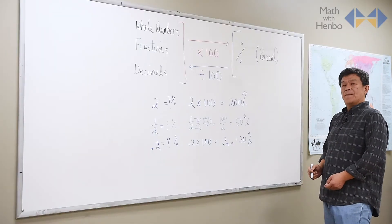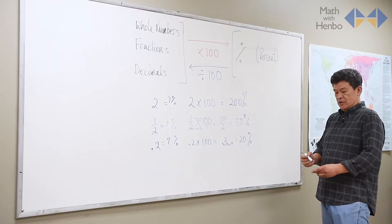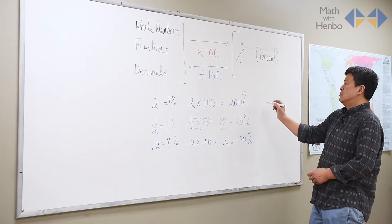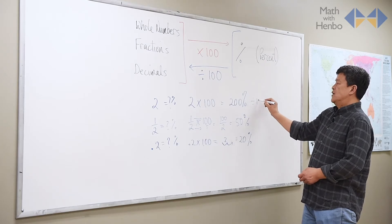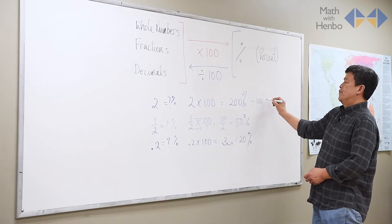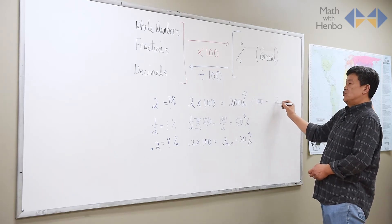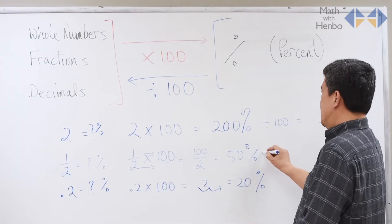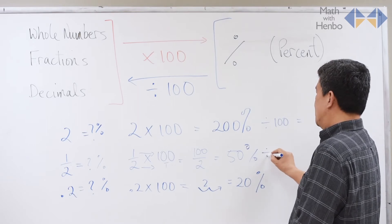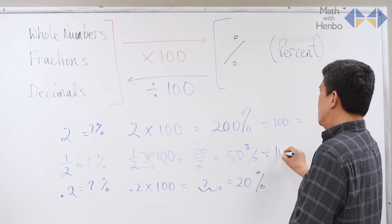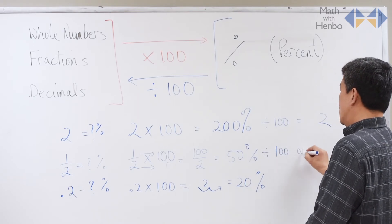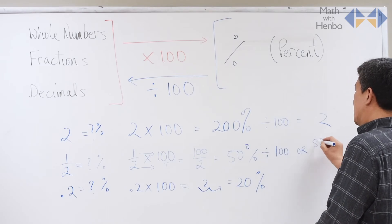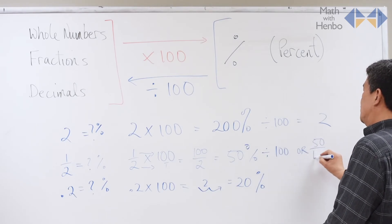But if I'm to go backwards, what do I do? Well, divide by a hundred. That gives me two again. Fifty percent divided by a hundred — you can work it this way, or, as you know, a fraction is a division.